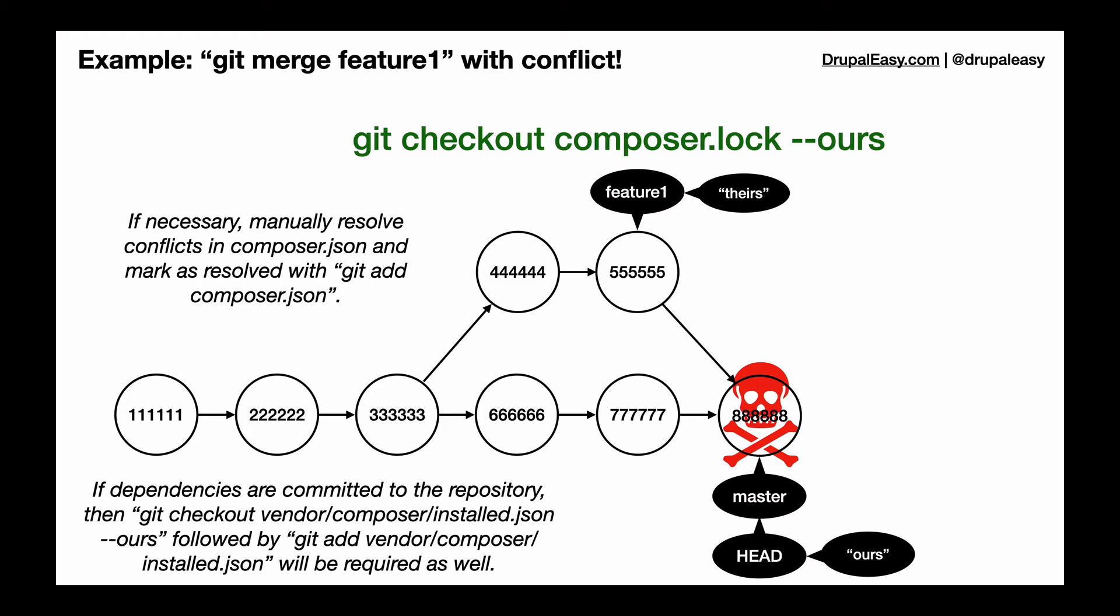So the first thing we're going to do is we just have to pick one that we're going to start off with. So when we do a git checkout composer.lock --ours, we're basically telling git to use the version of the composer.lock in ours. When you're merging, that's the branch you're currently on, which would be the master branch.